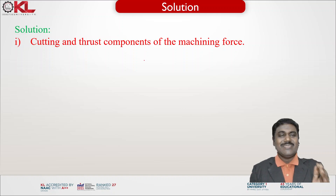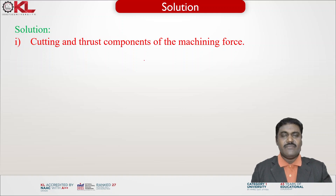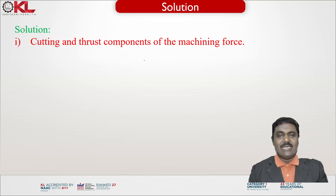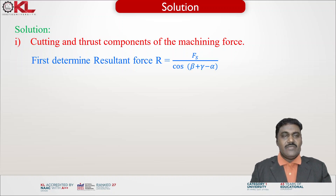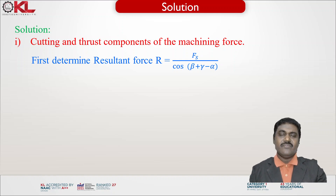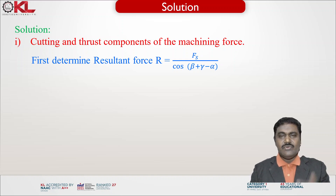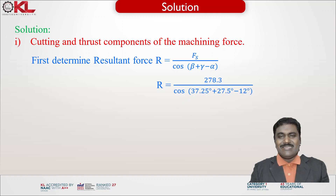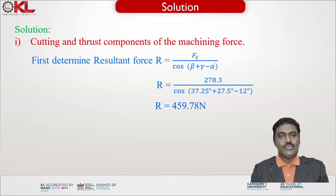The first item asks for the cutting and thrust components. From the merchant circle diagram, first determine the resultant force R. Since we already know the shear force, R = Fs / cos(β + γ − α). Substituting the values gives the resultant force R = 459.78 Newtons.